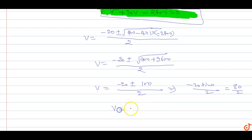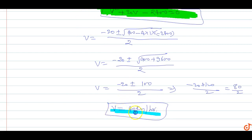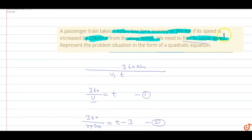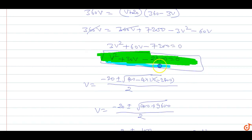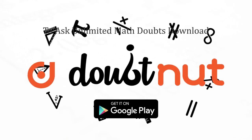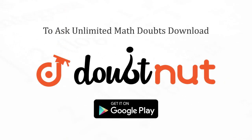So V equals minus 20 plus 100 divided by 2, which equals 80 divided by 2. The usual speed of the passenger train is 40 km per hour. This is the answer for this question.